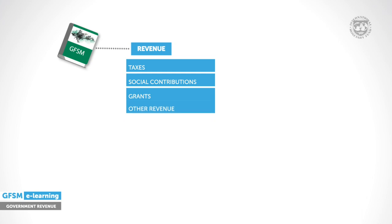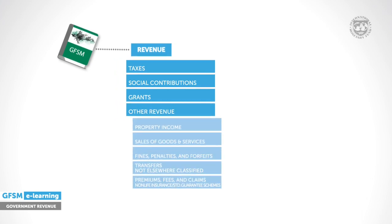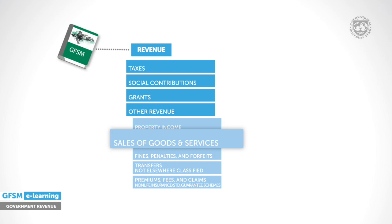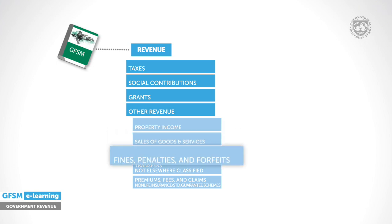Other revenue combines revenue not classified as taxes, social contributions or grants. Subgroups include property income such as interest, dividends, rent, or sales of goods and services. This category also includes administrative fees such as those related to the issuance of driving licences or passports, and income from fines and penalties.